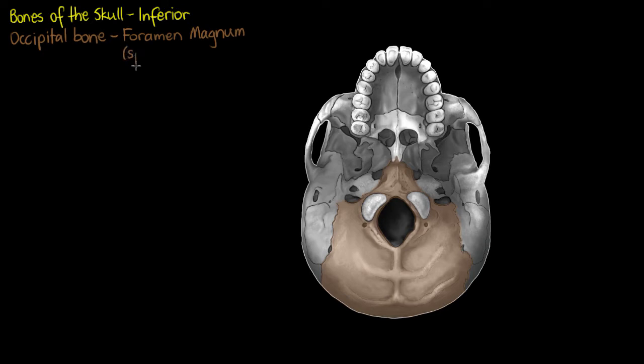The foramen magnum is one of the largest foramen in the body and has a very important role. It is the exit point for our spinal cord to leave through our skull and descend into the spine, so you could almost think of it as the gateway between thoughts and actions.